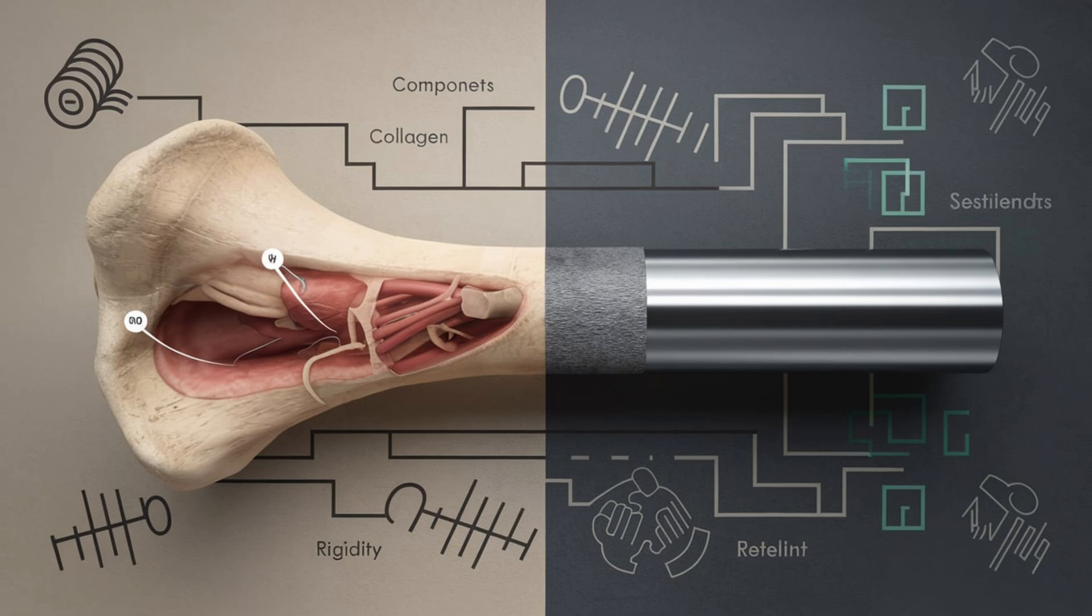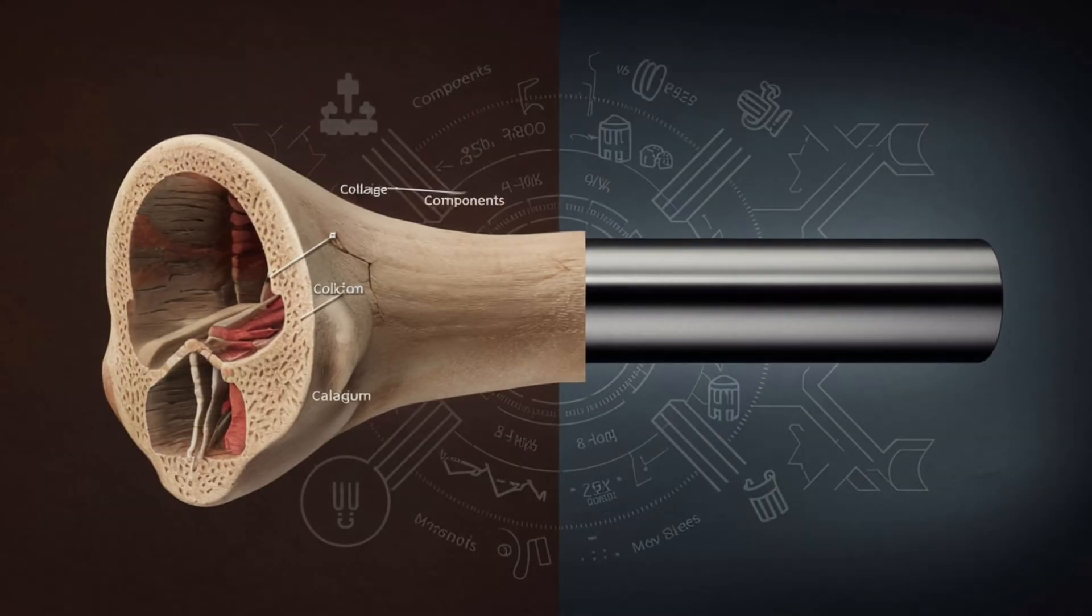Bones have a unique structure made of two main parts: compact bone, which provides strength, and spongy bone, which absorbs shock. Together, these layers create a structure that's both incredibly strong and lightweight.